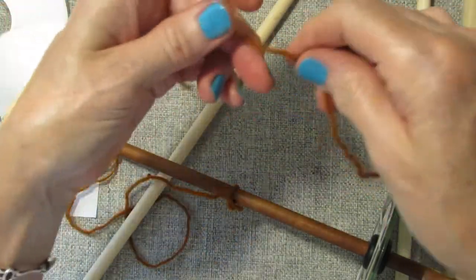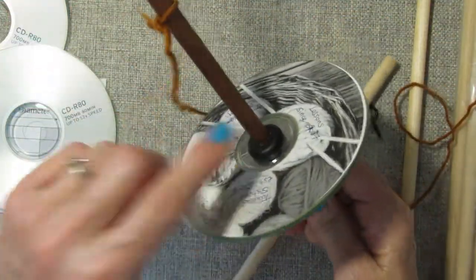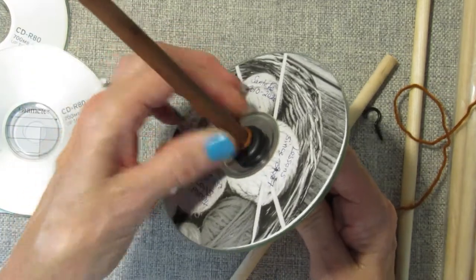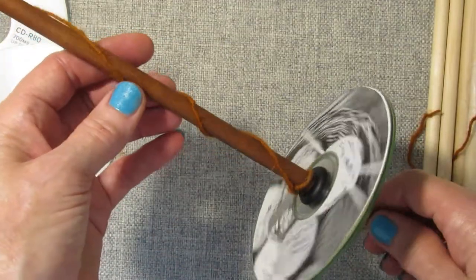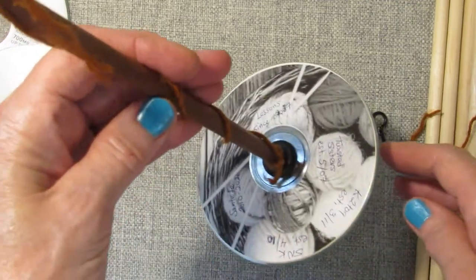And the other end of this leader is going to be tied onto the top of your whorl. And that's all there is to making a simple beginner's drop spindle.